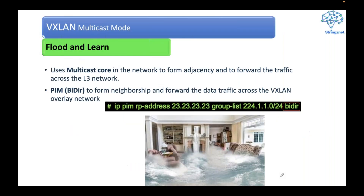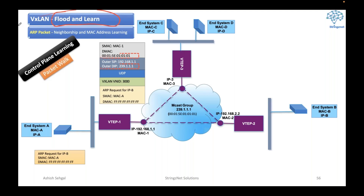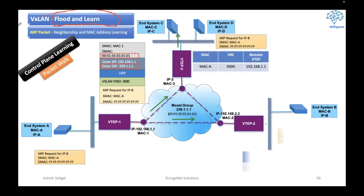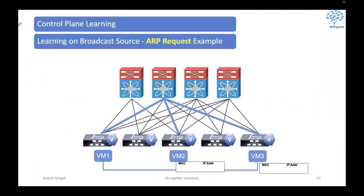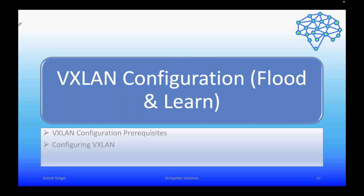We'll explain what flood and learn is, including a configuration. We will have a packet walk of an ICMP packet under flood and learn — how the transformation and encapsulation of a packet happens when it comes to a device called VTEP. What is VTEP? We will understand this well in advance. We'll also cover how ARP request and ARP response transformation happens and how VXLAN handles it.